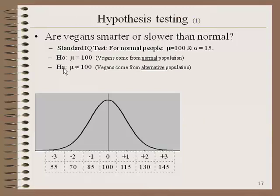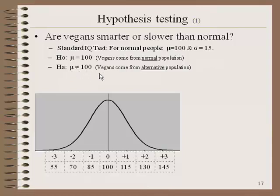We would have both the null and the alternative hypothesis. The null hypothesis, which we'd like to disprove, would be that vegans come from the normal population. The null is that mu equals 100, which would mean that vegans come from the normal population, and the alternative would be that mu is not equal to 100, meaning that vegans come from some alternative population that has a different mean — so maybe they're smarter, for example.